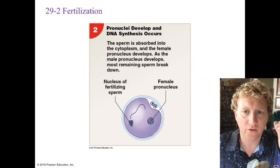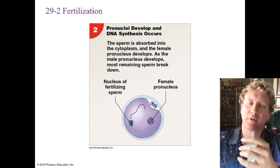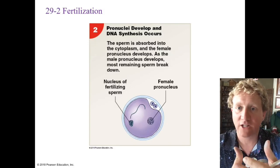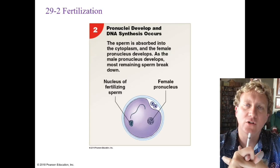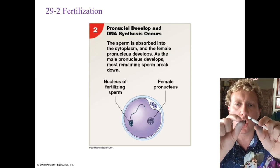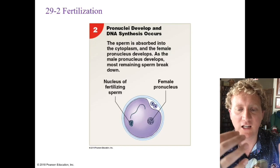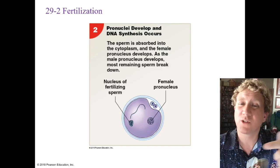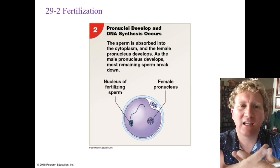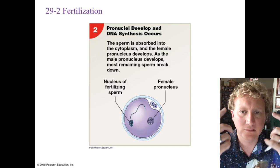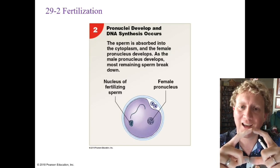The sperm has come in. Before discussing pronuclei, let's cover the cortical reaction. Enzymes are released within the oocyte that inactivate other sperm receptors around the outside of the egg and harden the zona pellucida — basically making an impenetrable shield so no other sperm can enter. We're trying to block polyspermy, which is more than one sperm coming in. The problem is if more than one sperm enters, it will inactivate the egg and make it non-viable, ending the pregnancy.